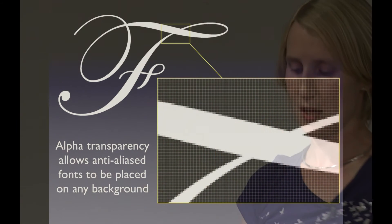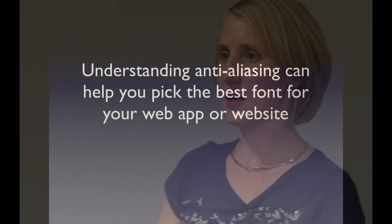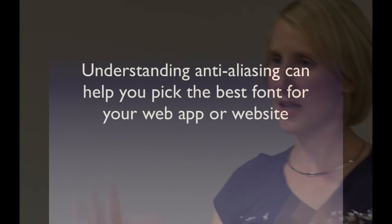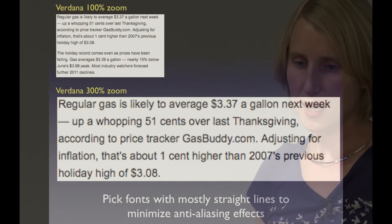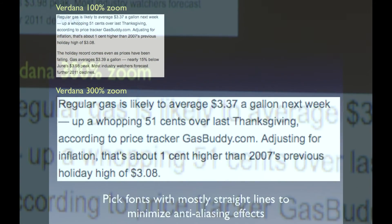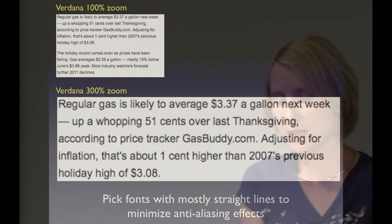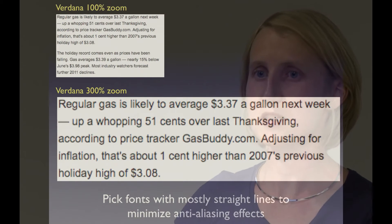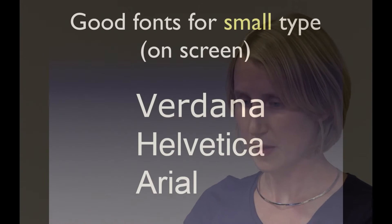Why should you care? Understanding anti-aliasing can help you pick the best font for your website, and picking the best font really improves usability, because a bad font can make something that's data-heavy particularly hard to read. Here's an example from USA Today — they've chosen a really good font. At 100% it's pretty readable, and one reason it's so readable is there's very little anti-aliasing going on, because they've picked a font with very straight lines and no serifs.